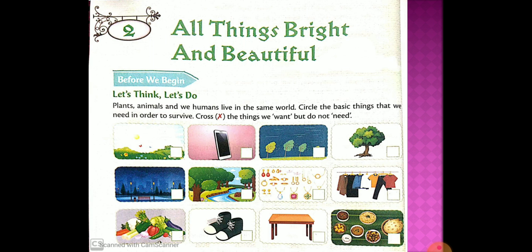So what you have to do in this activity is that you have to see these pictures carefully. You have to identify those things which are very basic and we need for our survival. And you have to also see those things which we want, but if we don't get those things, still we can survive. So you have to circle those things which we need for our survival, and you have to cross out those things which we want but actually do not need for survival.